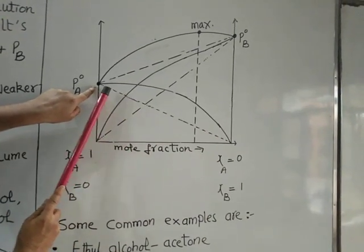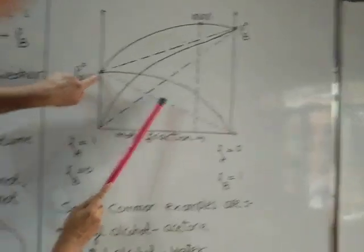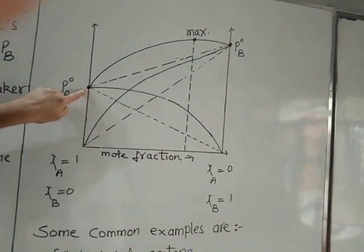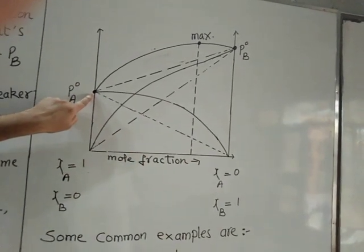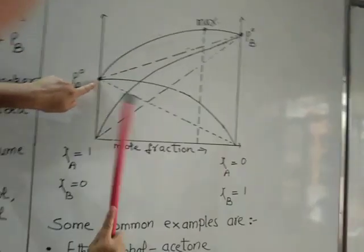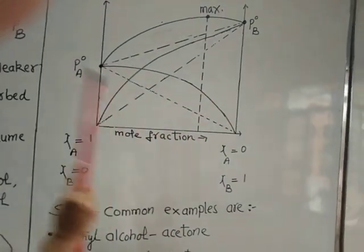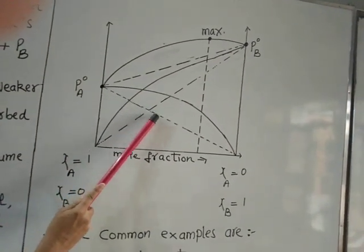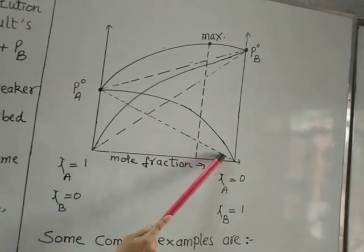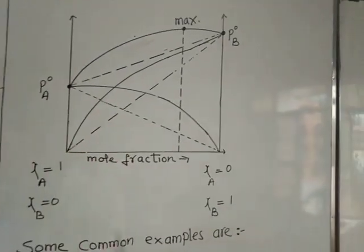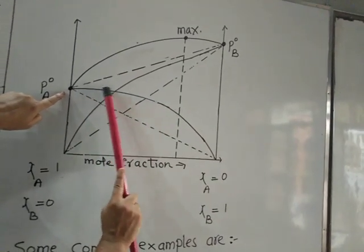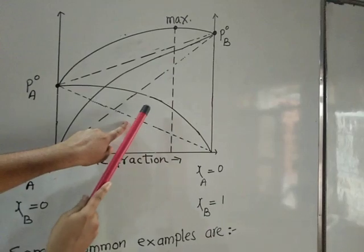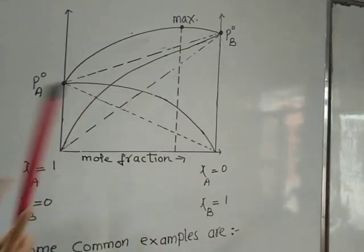The dotted line indicates variations in the vapor pressure of the solvent if the solution were ideal and Raoult's law were obeyed. But since these are non-ideal solutions, Raoult's law is not obeyed, so you will not get a straight line. Instead, you get a curved line. Because this is a case of positive deviations, vapor pressure is higher, so the curved line must be drawn above the straight dotted line.